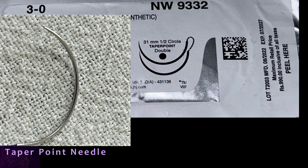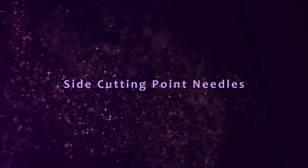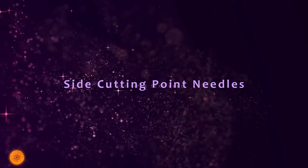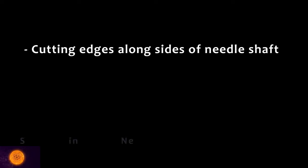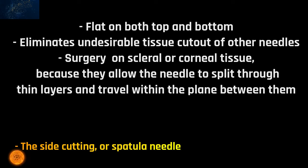Next is side cutting point needles — also known as spatula needles. Some of these needles I learned about while preparing this video, as they are not routinely used. Basically, there is a cutting edge along the sides of the needle shaft, and these needles are flat on both top and bottom. They eliminate undesirable tissue cut-out of other needles and are used in surgery on scleral or corneal tissue — essentially in ophthalmic surgery. They allow the needle to split through thin layers and travel within the plane between them.